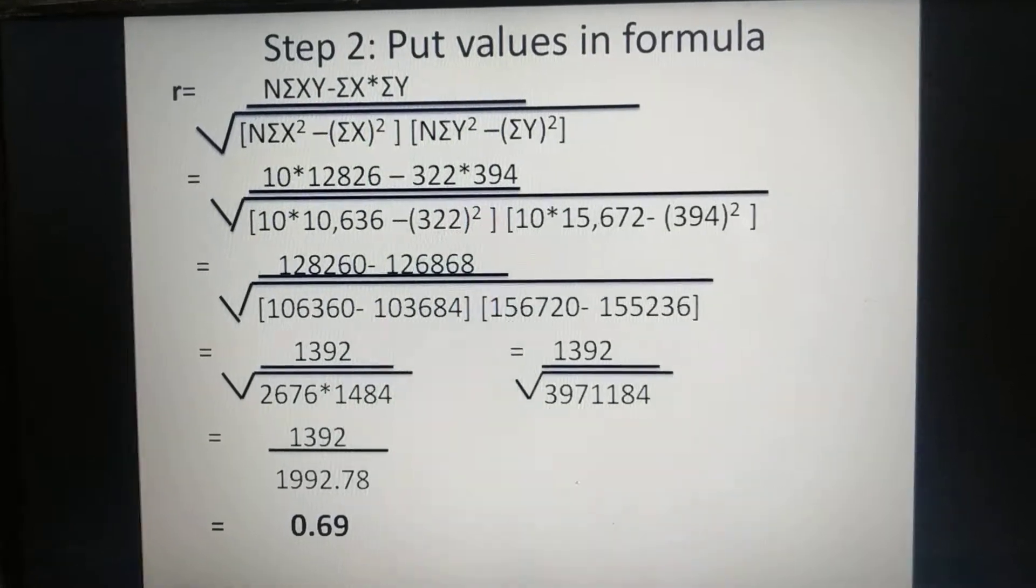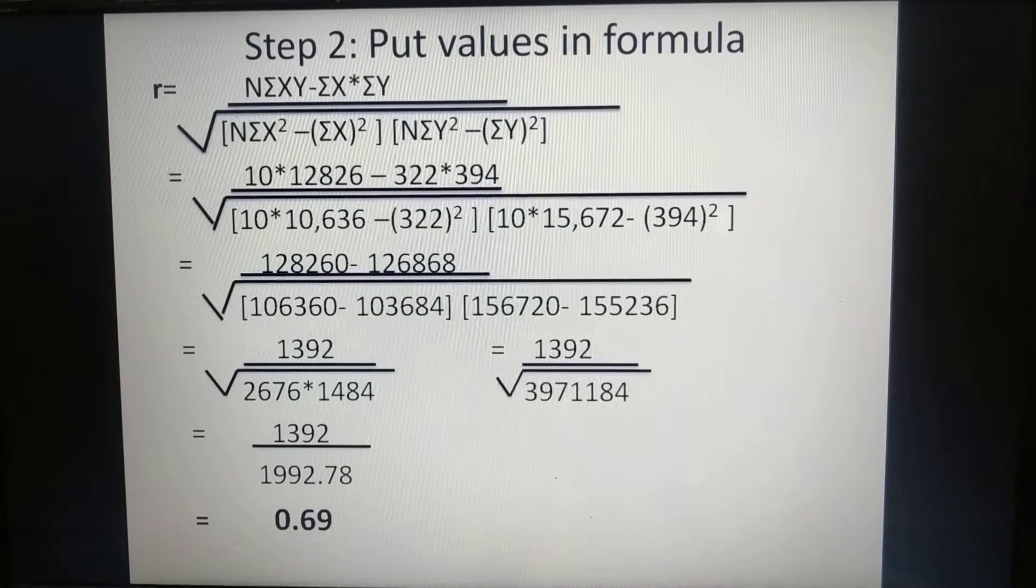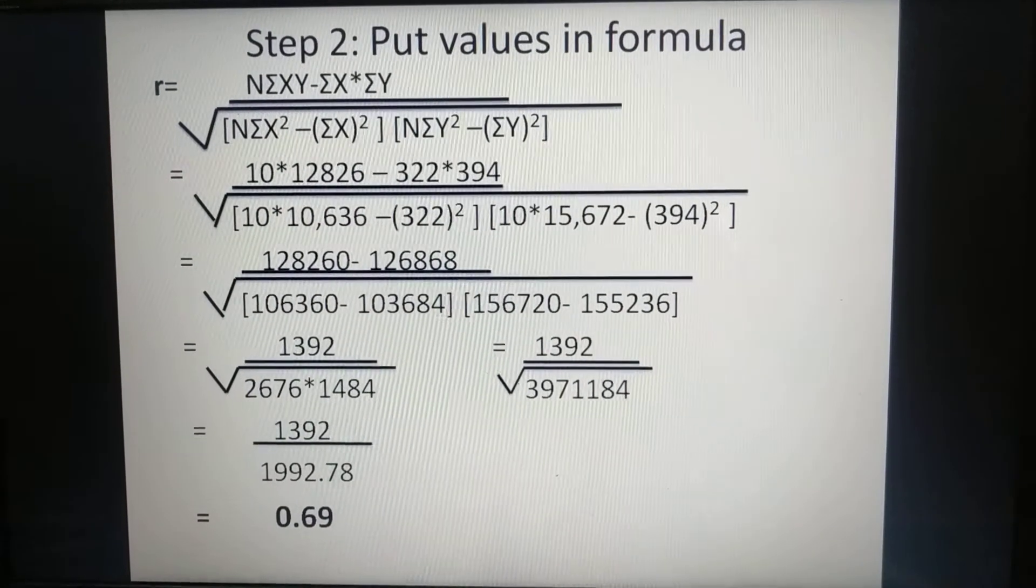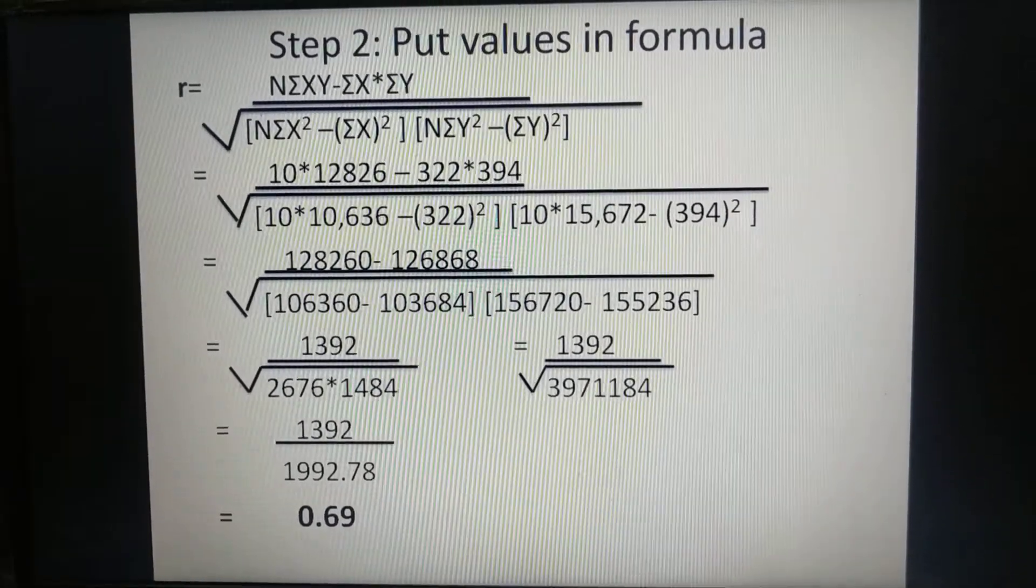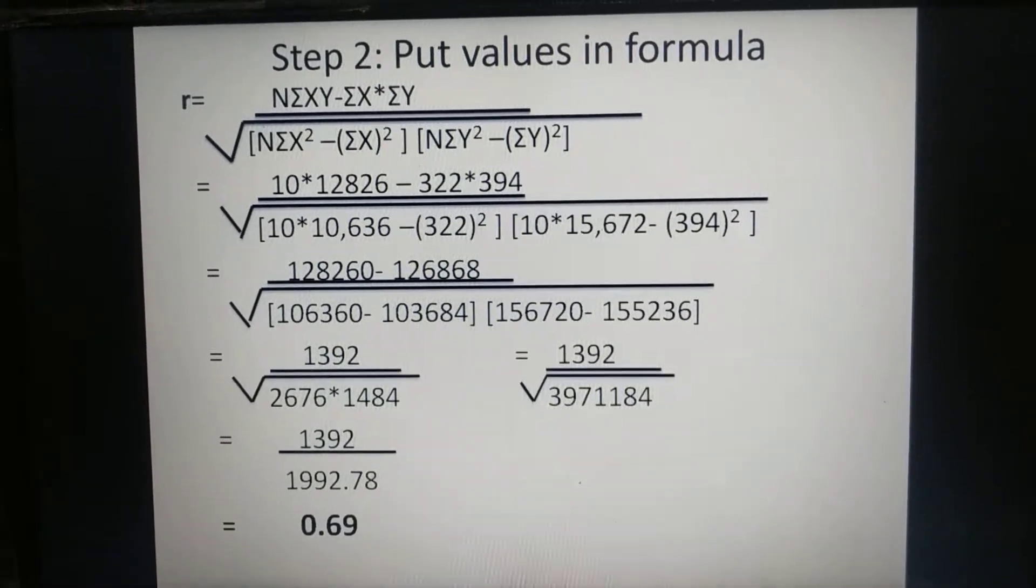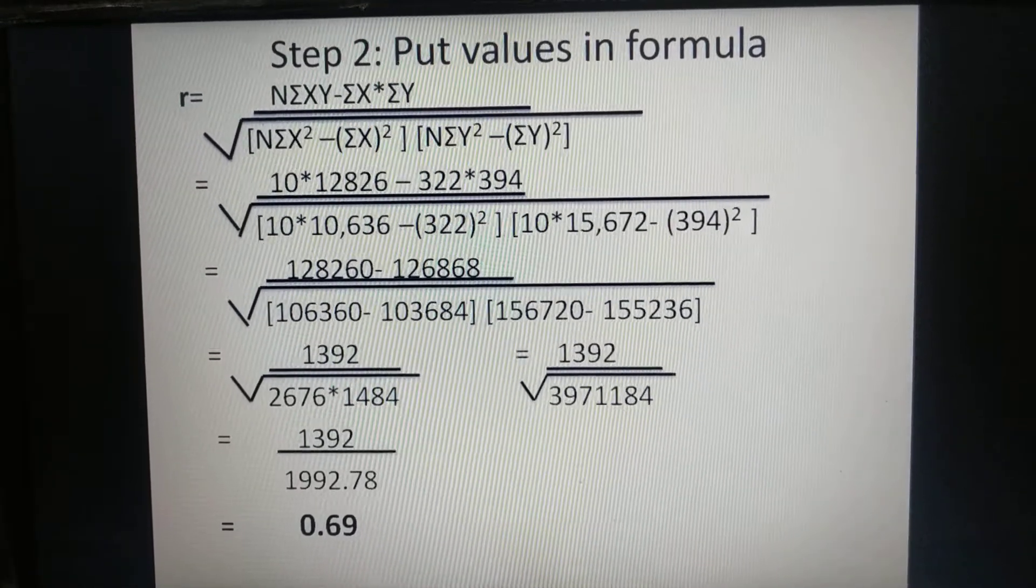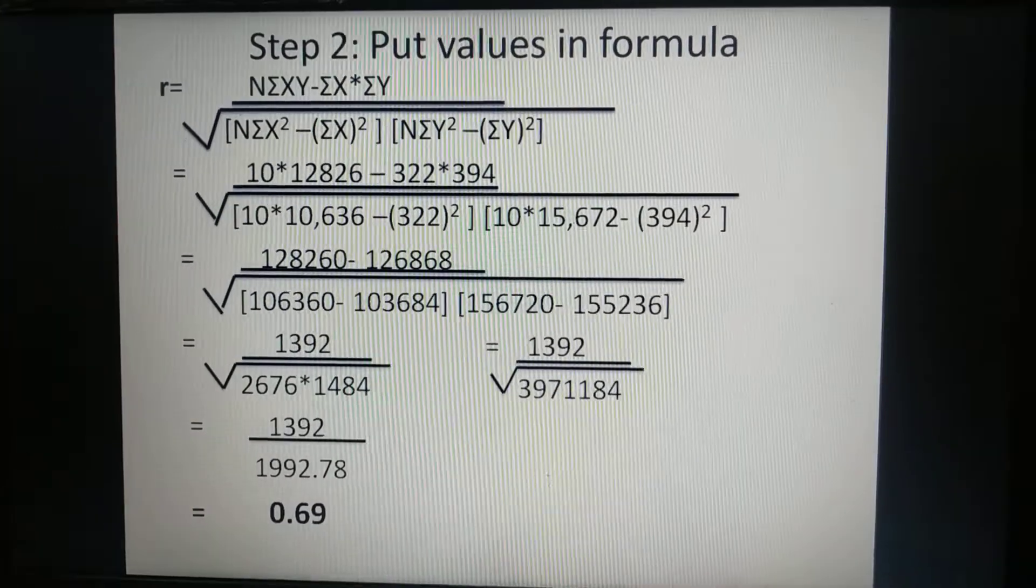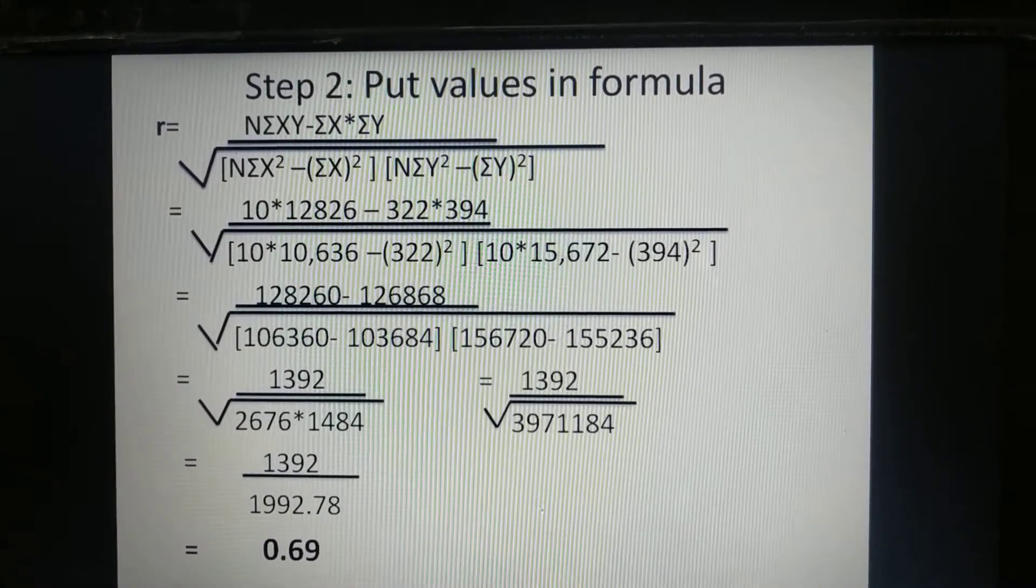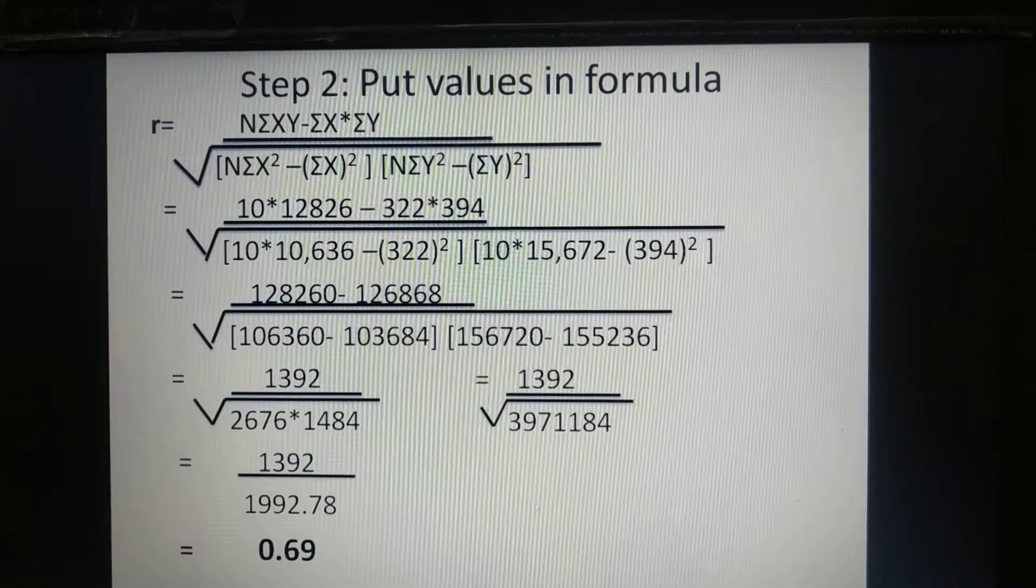In next step multiply 2676 with 1484. The value comes 3971184. Now find its square root. The value comes 1992.78.